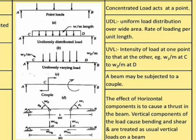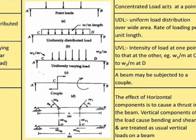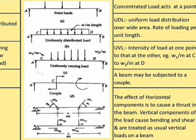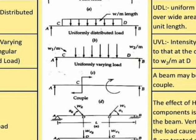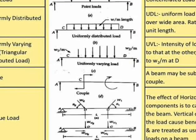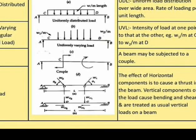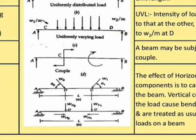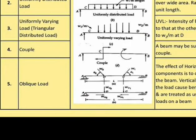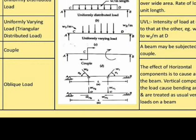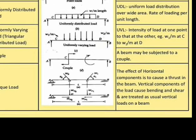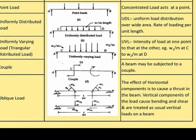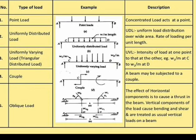In the uniformly varying load, the intensity varies from w1 per meter at one point to w2 per meter at the other, so the load is increasing. Next is a couple — a beam may be subjected to a couple as shown in figure d. Last is an oblique load, which is an inclined load applied outside the plane. The horizontal component causes thrust in the beam, and the vertical component causes bending and shear, treated as a usual vertical load.